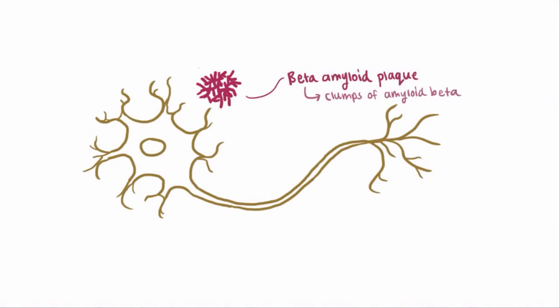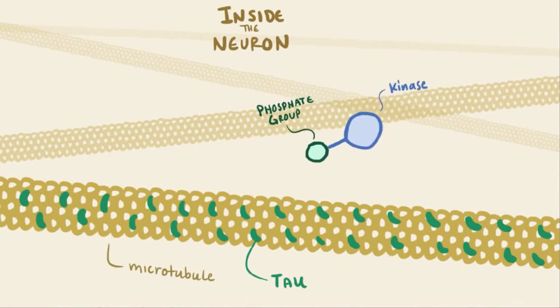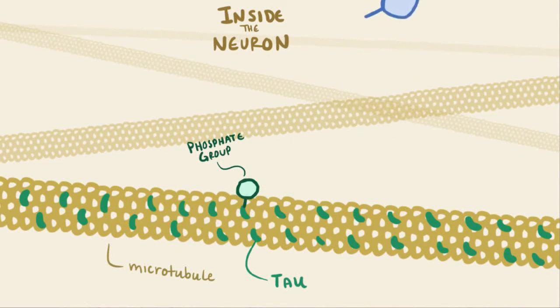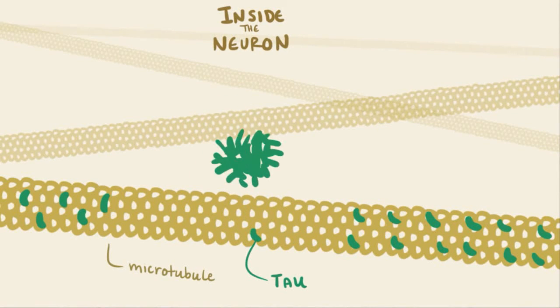Although again, it's not completely understood, it's thought that the beta-amyloid plaque buildup outside the neuron initiates pathways inside the neuron that leads to activation of kinase, an enzyme that transfers phosphate groups to the tau protein. The tau protein then changes shape, stops supporting the microtubules, and clumps up with other tau proteins, and gets tangled, and leads to the other characteristic finding of Alzheimer's disease, neurofibrillary tangles.